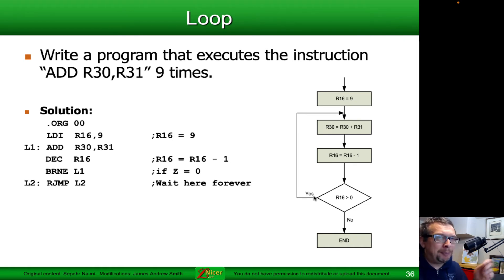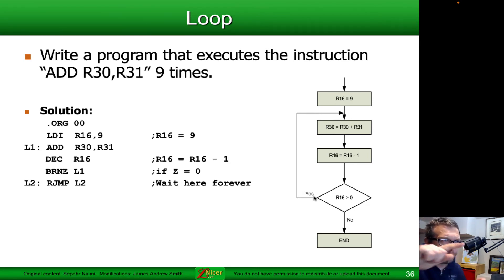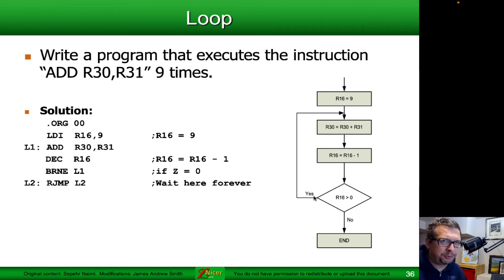So basically, as long as R16 is not zero — one, two, three, four, five, six, seven, eight, nine — we keep looping back to L1. As soon as the decrement results in a value of zero in register R16, BRNE allows us to move out of the loop to label L2. It doesn't jump to L2 explicitly; it just goes to the next instruction allowed by the program counter.